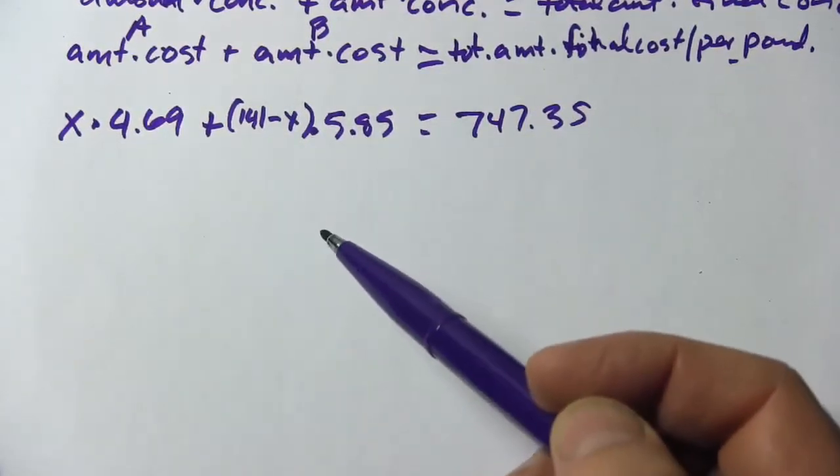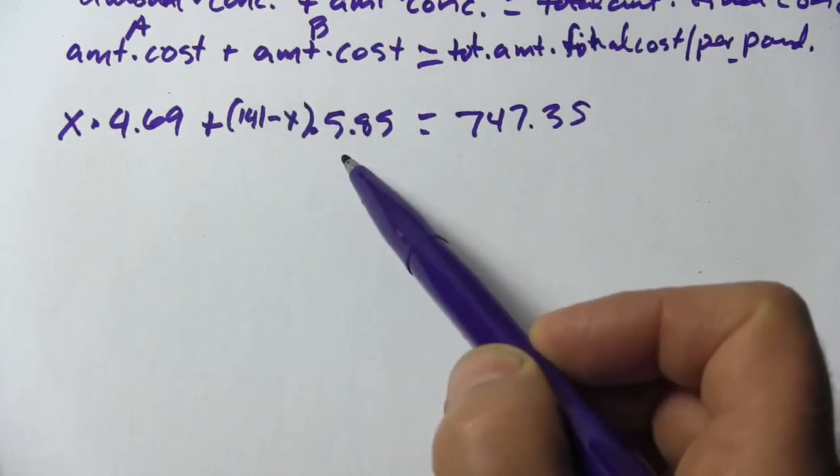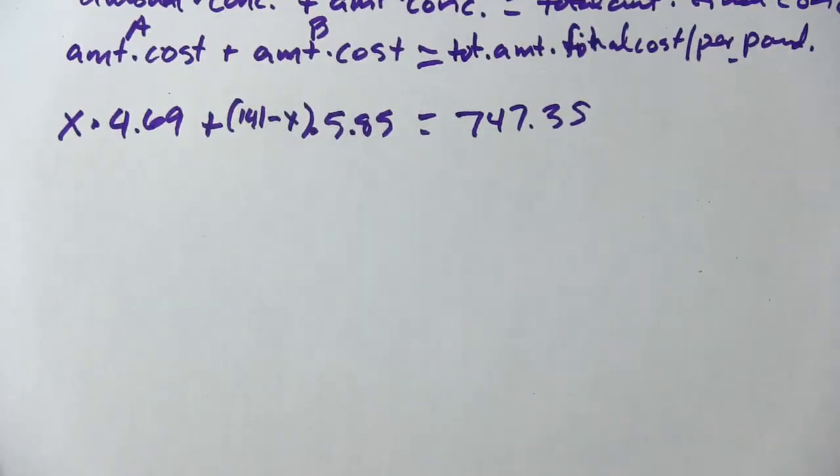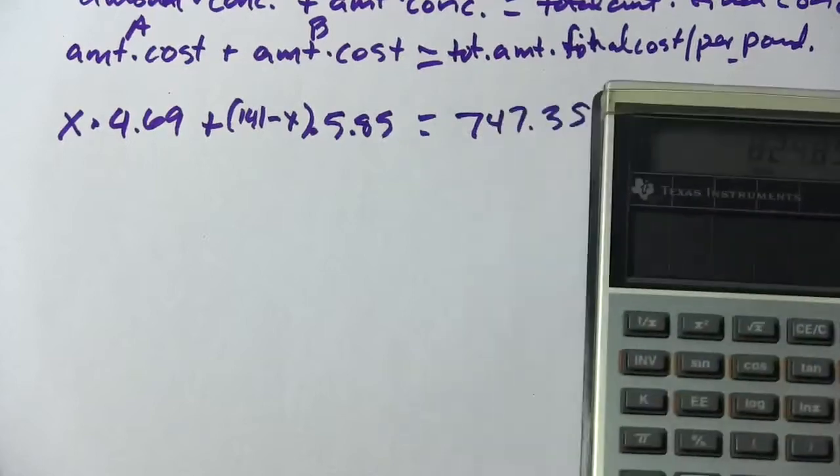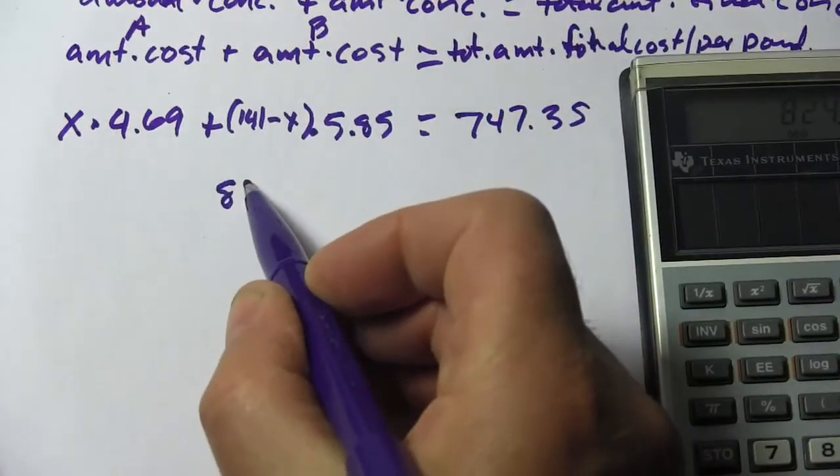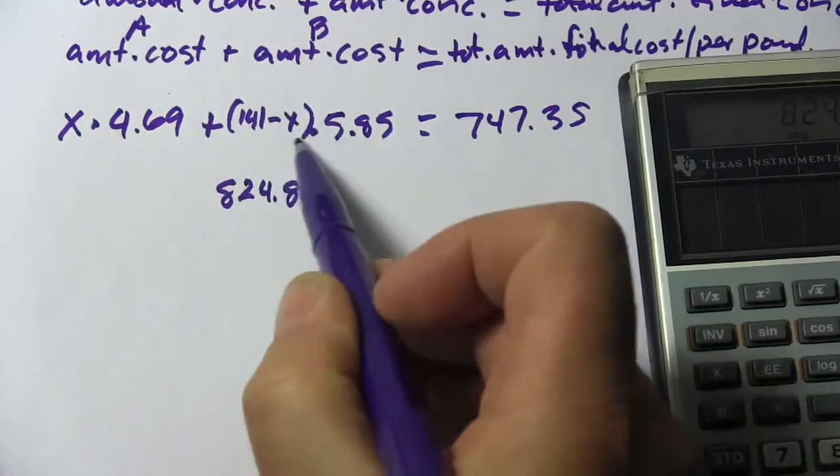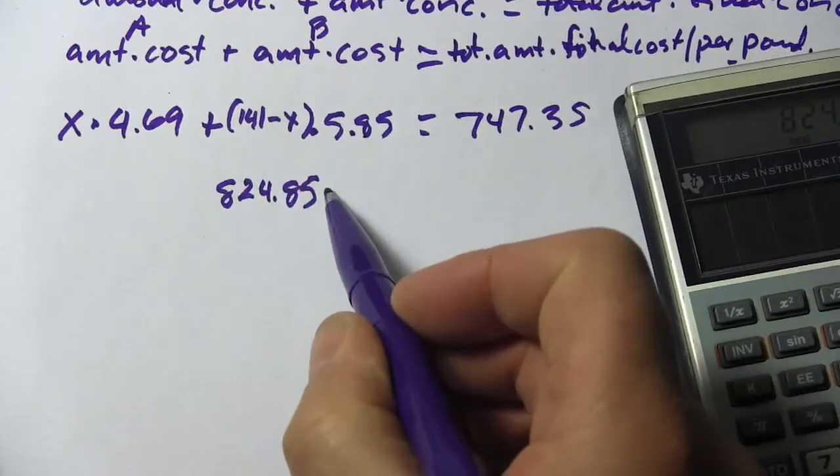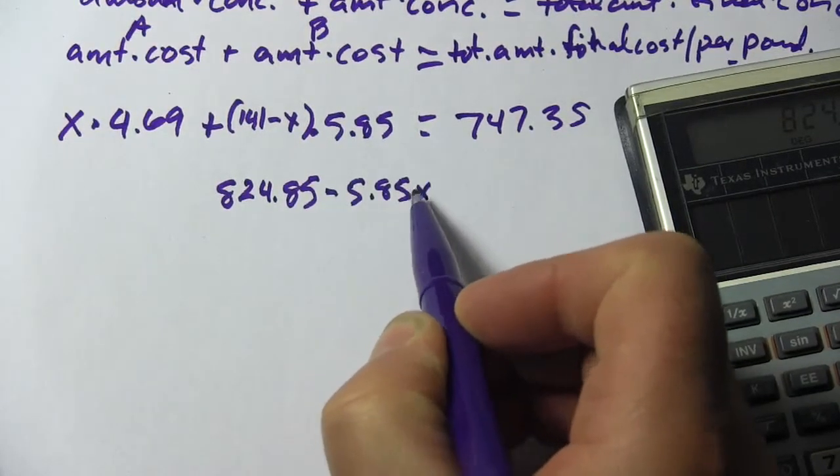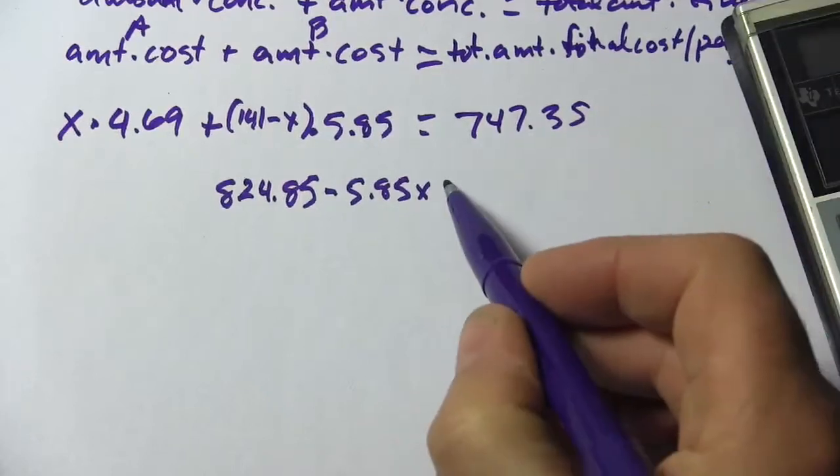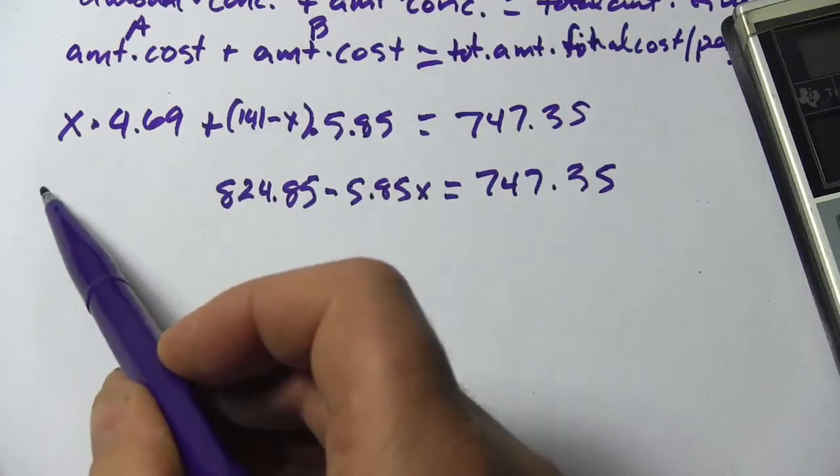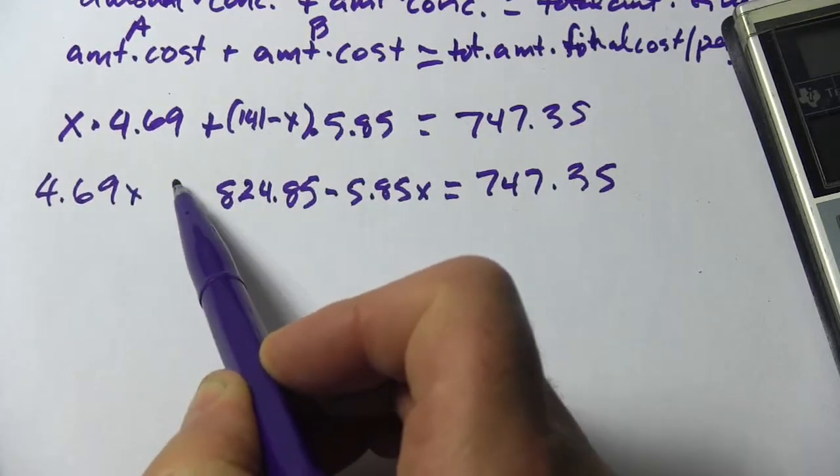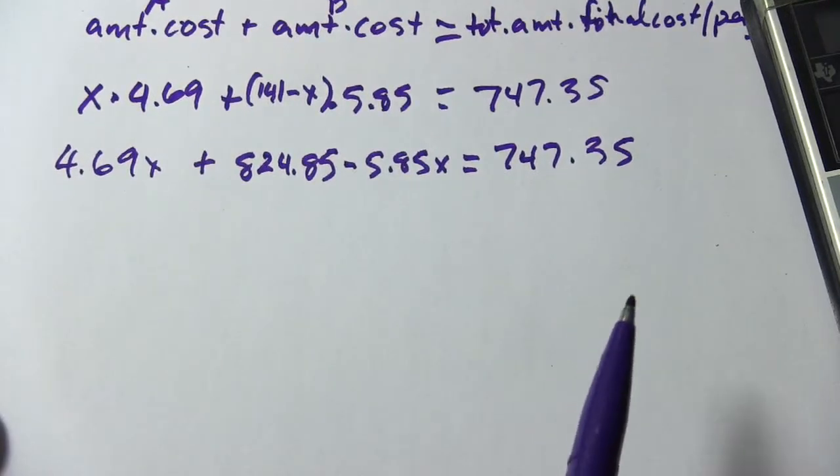We're going to just try to solve this for X. The first step here is we need to distribute this 5.85. So I'm going to get my calculator out, we've got 141 times 5.85, and that's 824.85. And then 5.85 times a negative X is minus 5.85X. That's going to equal 747.35. And then we have our, well I'll just write this the other way, 4.69 times X.